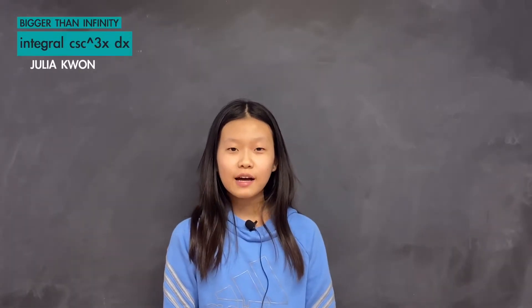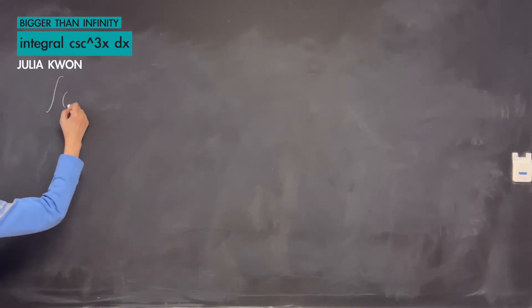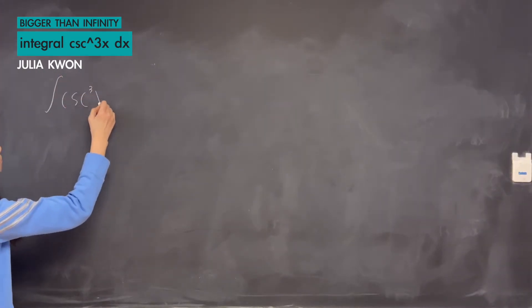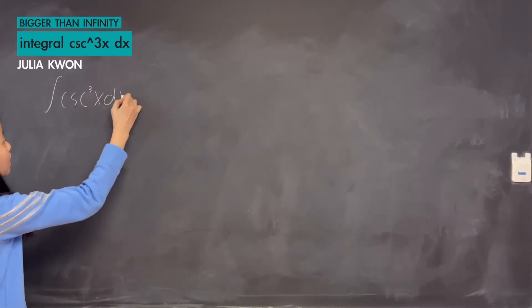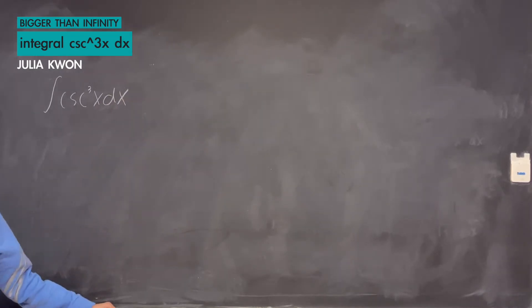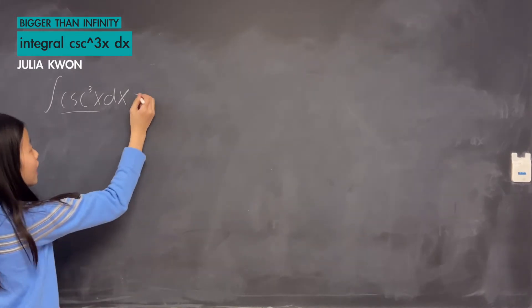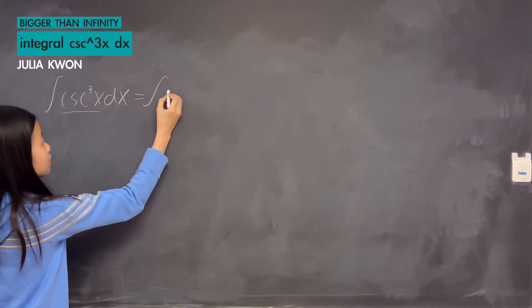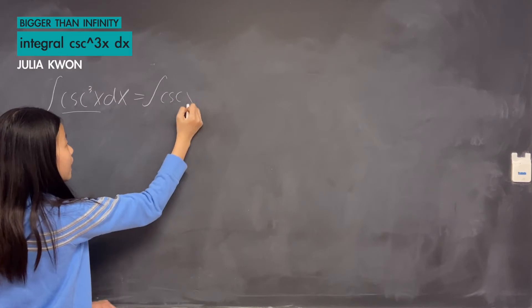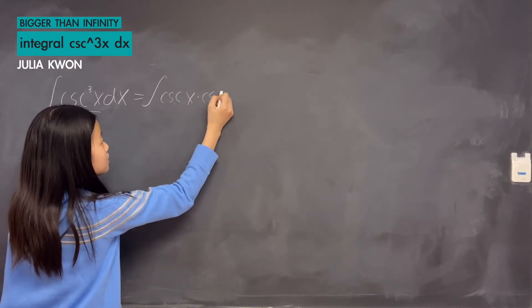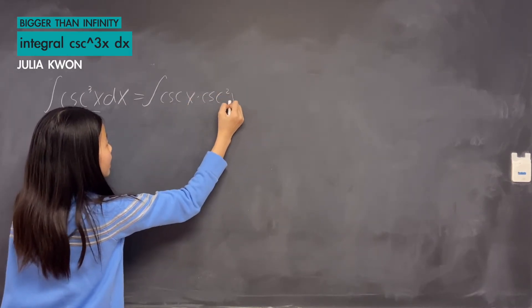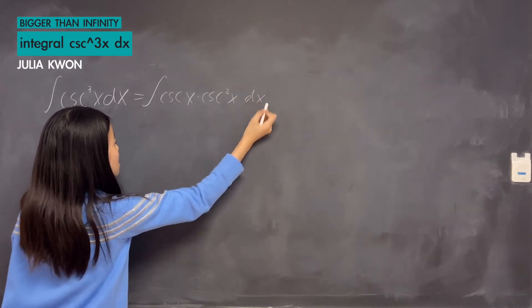Hello everyone. In this video I'm going to be solving for the integral of cosecant cubed x dx. The first thing we want to do here is change cosecant cubed x so that we would have cosecant x times cosecant squared x.